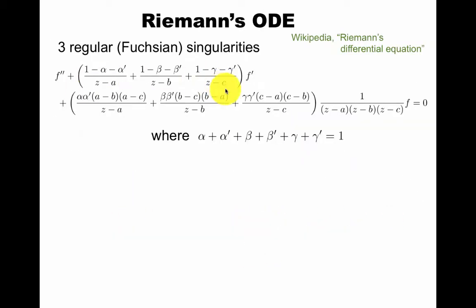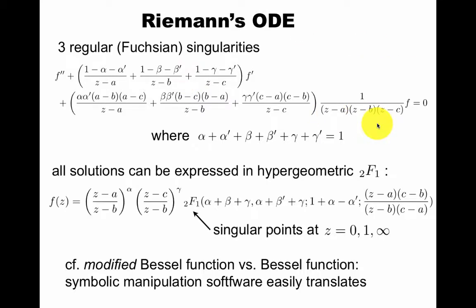So here's Riemann's ODE. You have this somewhat complicated looking ODE. All solutions can be expressed in this single function, the hypergeometric function 2F1, that has singular points only at 0, 1, and infinity. So the relation between this general f here and the hypergeometric function is kind of like the modified Bessel function versus Bessel function if you're familiar with that. Symbolic manipulation software can easily translate one into the other. If you want to solve this complicated equation, it's enough to just solve this simpler equation and have some simple factors in front.